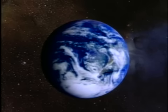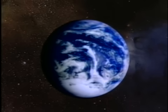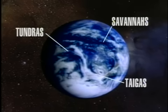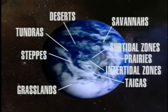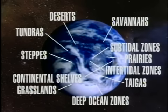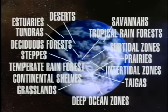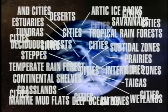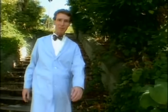This is the Earth, our world. All the living things that we know of live here, and they live in ecosystems — places like tundras, taigas, savannas, grasslands, prairies, deserts, intertidal zones, subtidal zones, continental shelves, deep ocean zones, estuaries, deciduous forests, temperate rainforests, tropical rainforests, arctic ice packs, wetlands, marine mudflats, and cities. That's a lot of environments, but there are a lot of living things to fill them up. The Earth's environments are just crowded with life. Living things take hold everywhere they can.